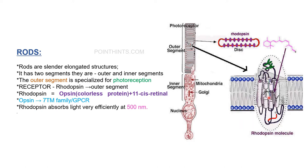Rhodopsin absorbs light very efficiently at 500 nanometers. This rhodopsin molecule is also called visual purple.